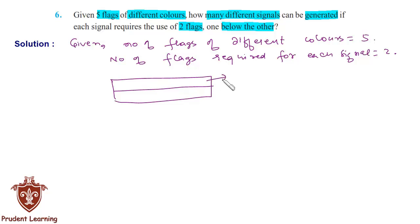We know that since we have 5 different colors available, the upper part of the flag can be made by using any one of the 5 flags, each of different colors, in 5 ways. And now the lower part of the signal can be made by any one of the remaining 4 flags in 4 different ways.